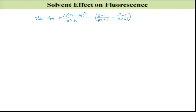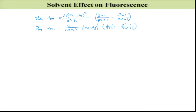So I got this equation, and converting to wavenumbers by dividing by c: ν̄_absorption − ν̄_emission = (2/hca³)·(μe − μg)²·[(ε−1)/(2ε+1) − (n²−1)/(2n²+1)]. This represents the difference between the absorption and emission spectra in wavenumbers.